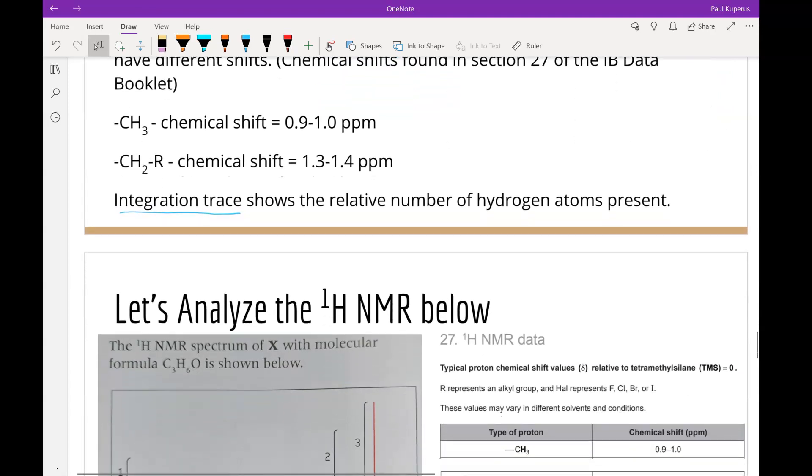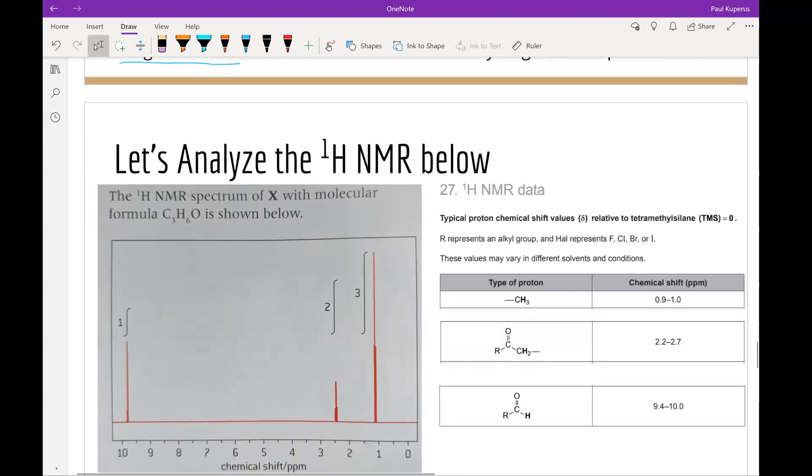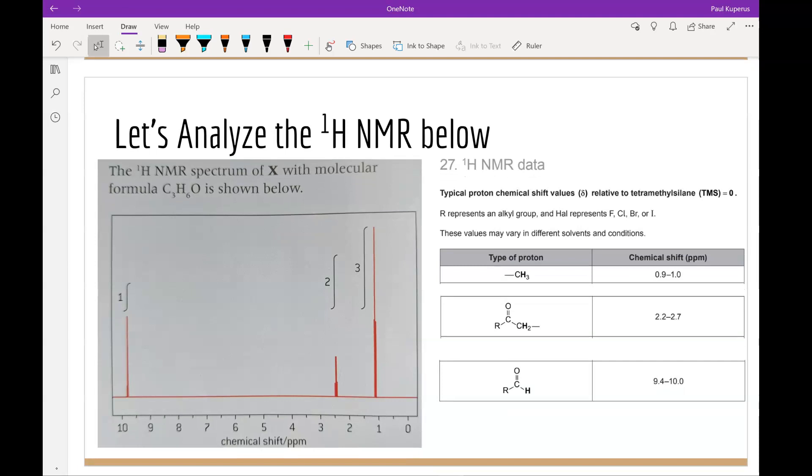We're going to analyze an HNMR spectrum for a compound C3H6O. Now with this compound, we have to maybe look at the IHD. So let's do that from our previous lesson.